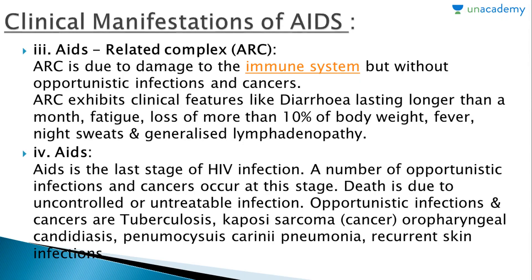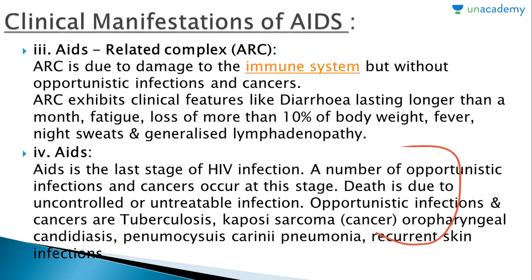The third stage is AIDS-Related Complex — ARC — which is due to damage to the immune system but without opportunistic infections and cancers. ARC exhibits clinical features like diarrhea lasting longer than one month, fatigue, loss of more than 10 percent of body weight, fever, night sweats, and generalized lymphadenopathy. The fourth and final stage is AIDS itself — the last stage of HIV infection — where a number of opportunistic infections and cancers occur, including tuberculosis, Kaposi's sarcoma, oropharyngeal candidiasis, and Pneumocystis carinii pneumonia or recurrent skin infections. After reaching this stage the person cannot be saved.